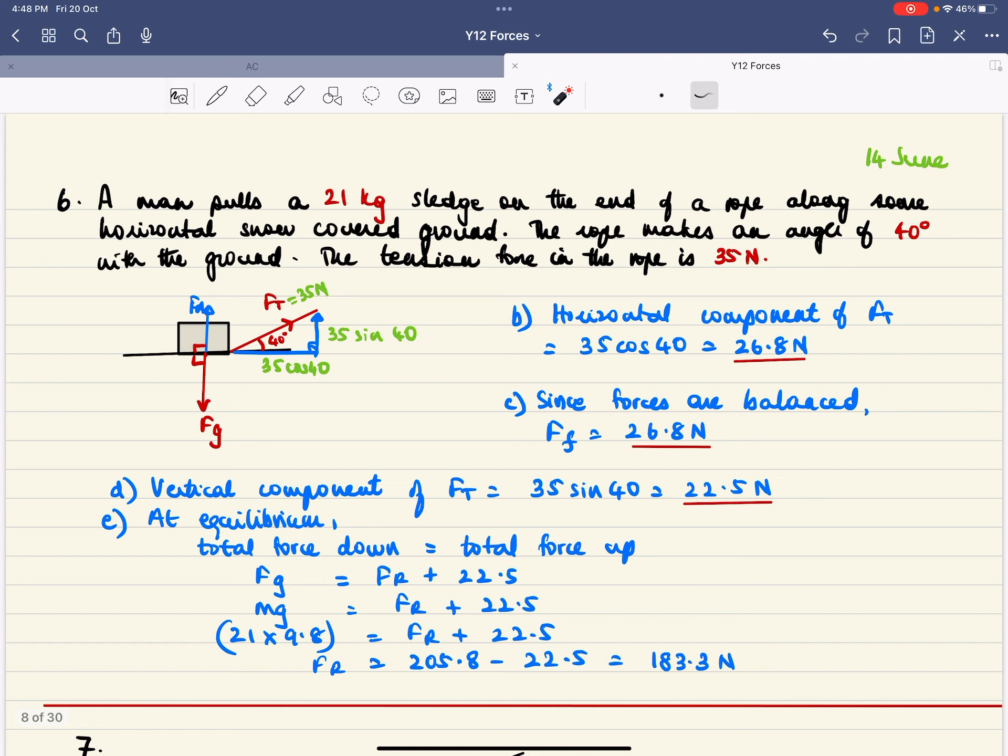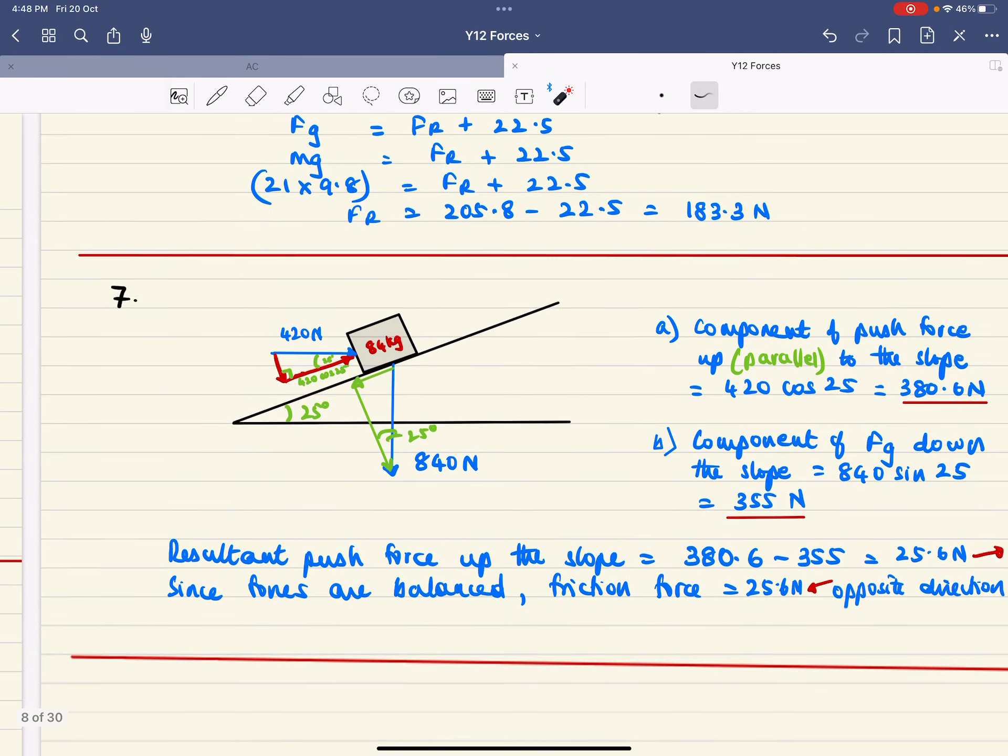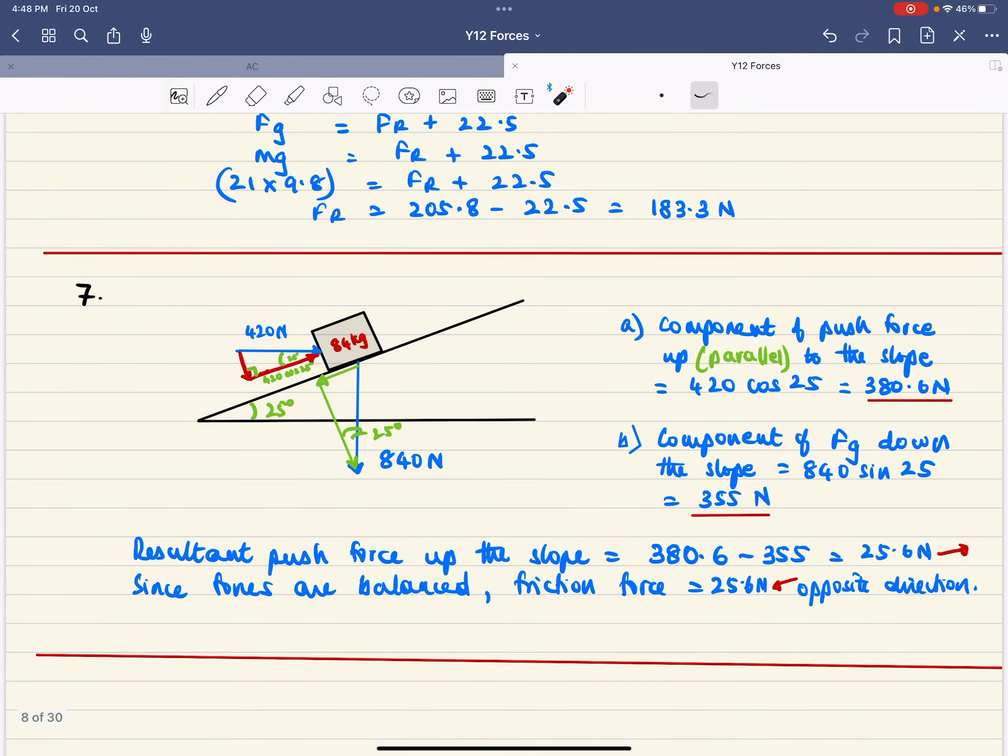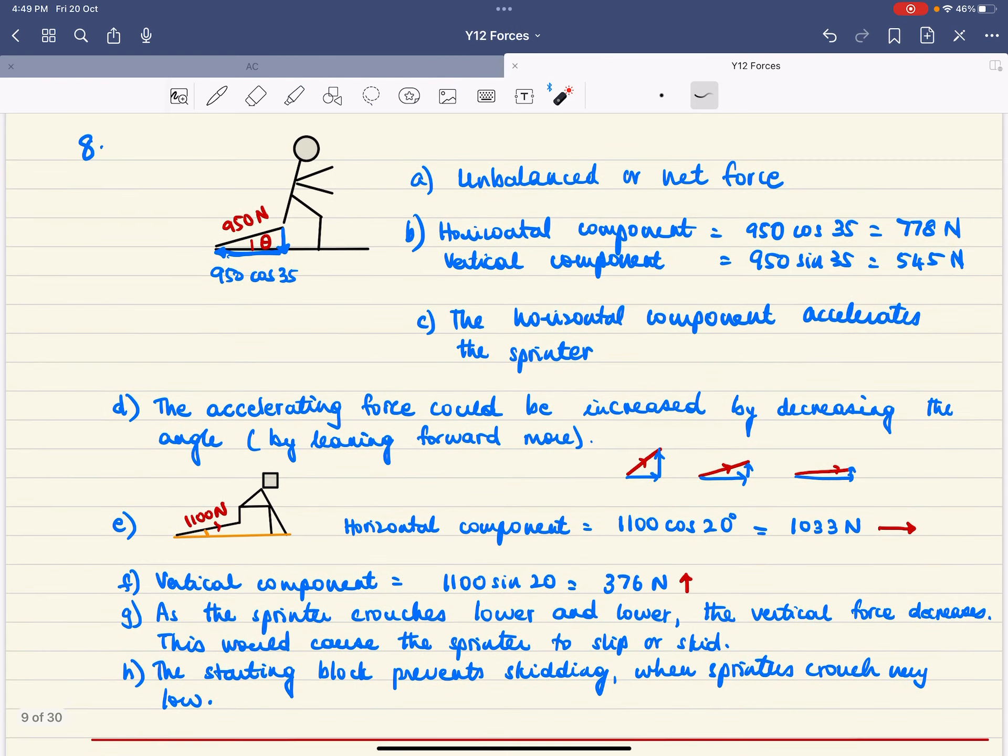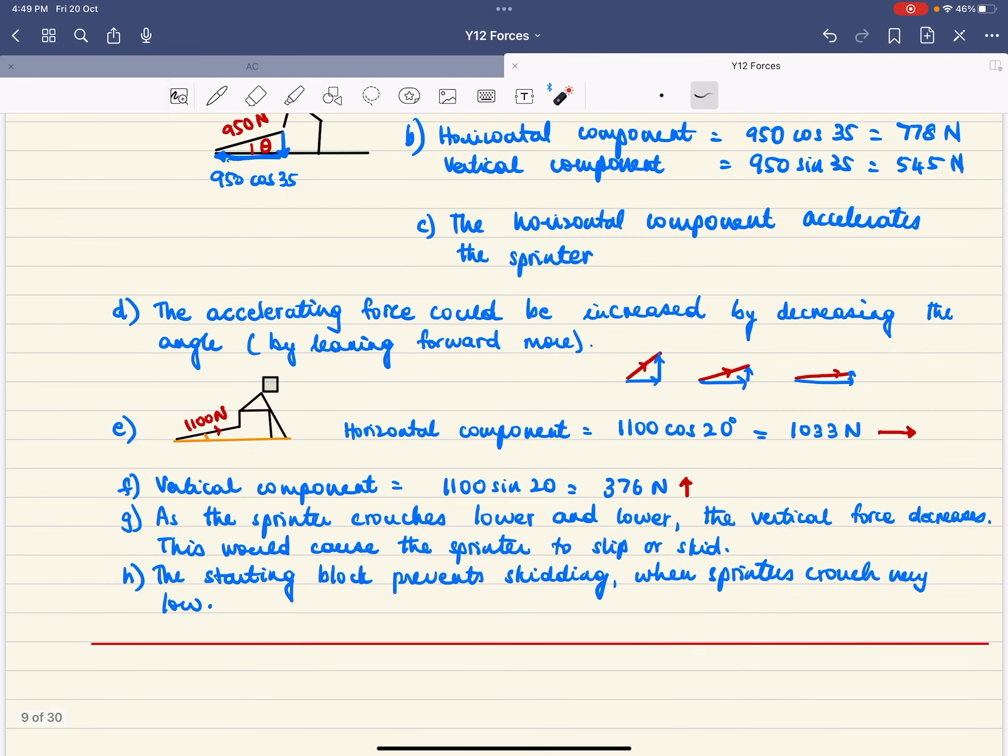So here's question 6 and here's question 7 and then there's question 8 about the runner, how they crouch down lower. What happens? Okay, there you go.